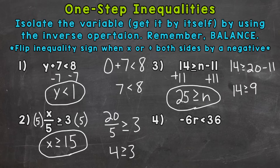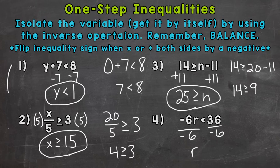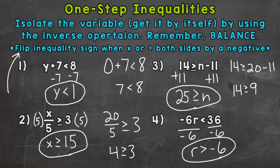Lastly, number four: we have negative six times r is less than 36. We're multiplying r by negative six, so the opposite would be to divide by negative six. Let's divide both sides by negative six. That cancels the negative sixes out on the left, isolating r, and we needed to do it to both sides to keep everything balanced. We need to flip the inequality sign when we multiply or divide both sides by a negative, so we flip that sign. Thirty-six divided by negative six is negative six, so r is greater than negative six.